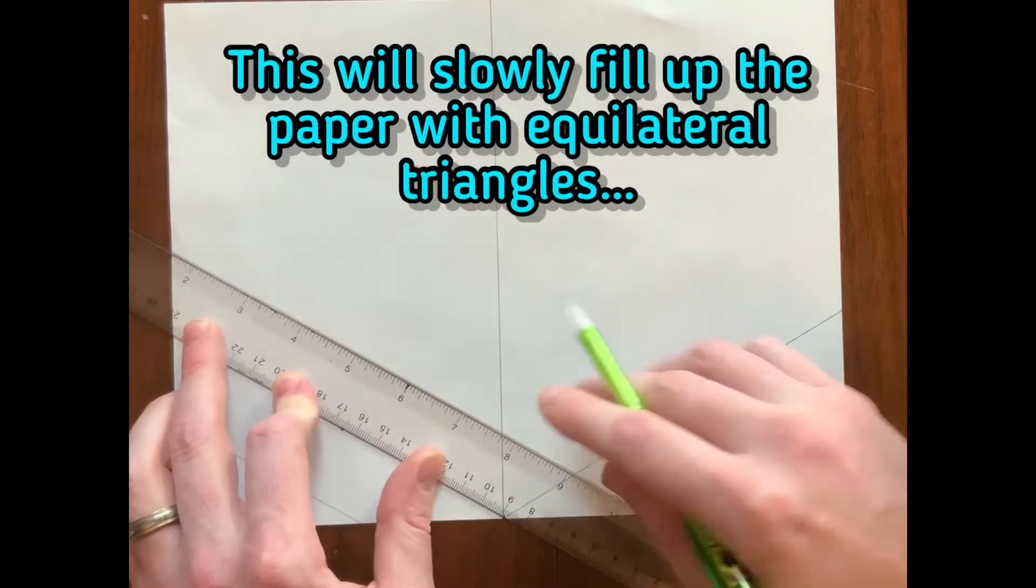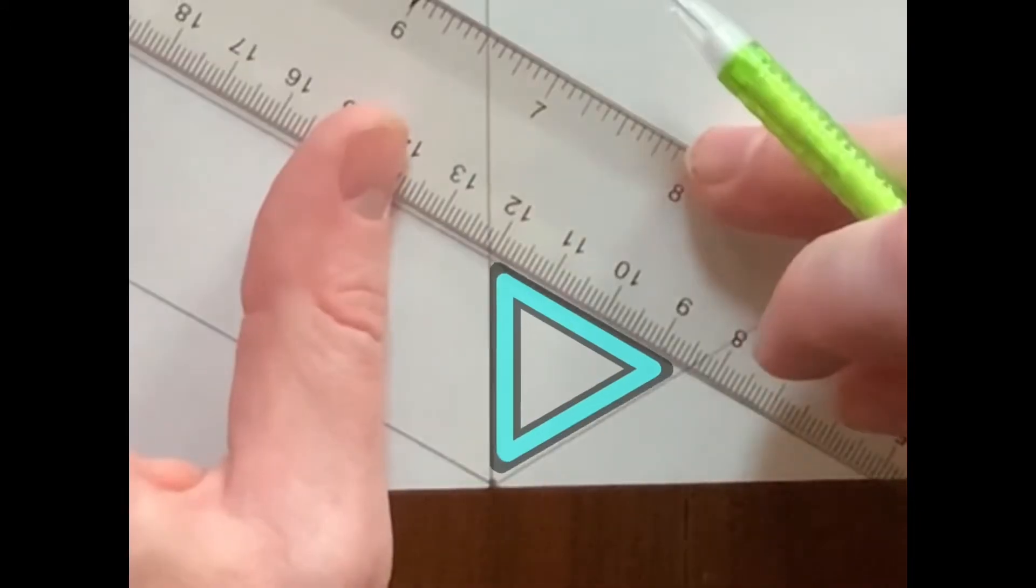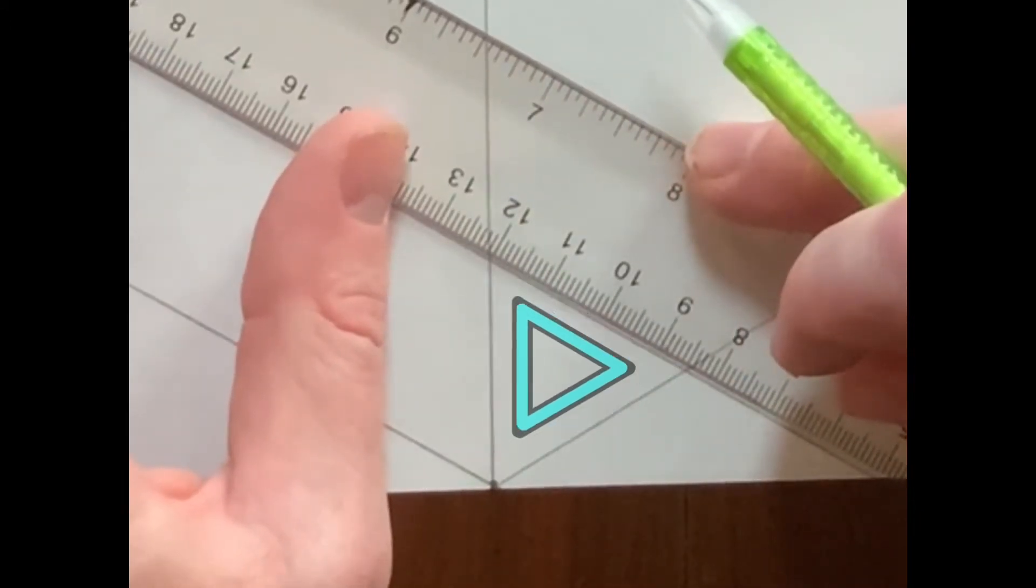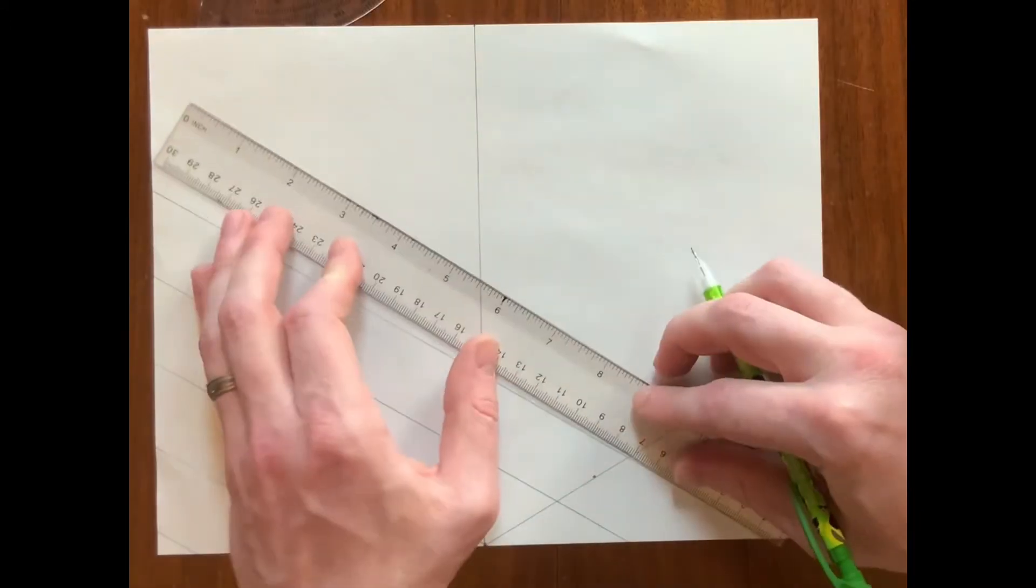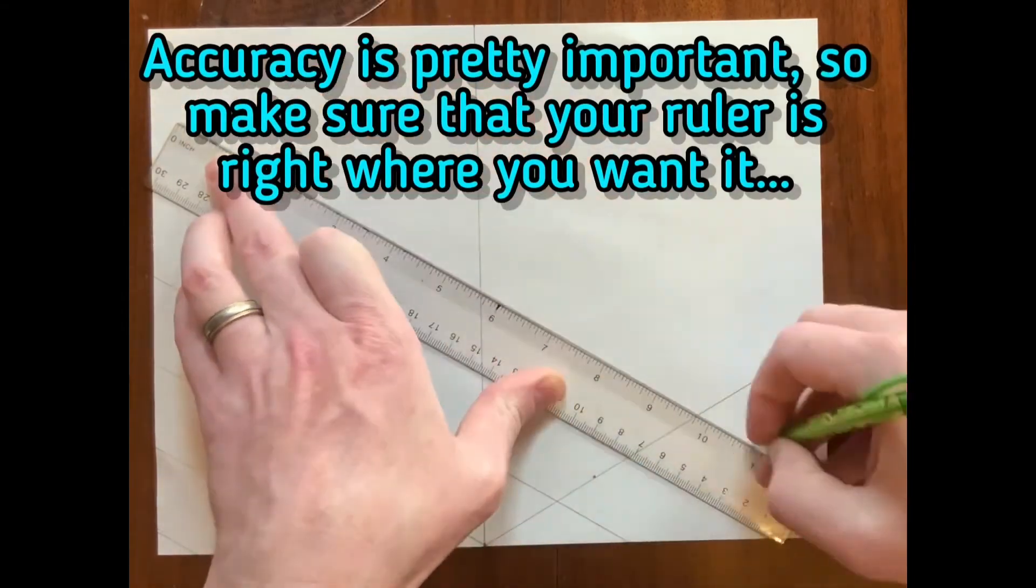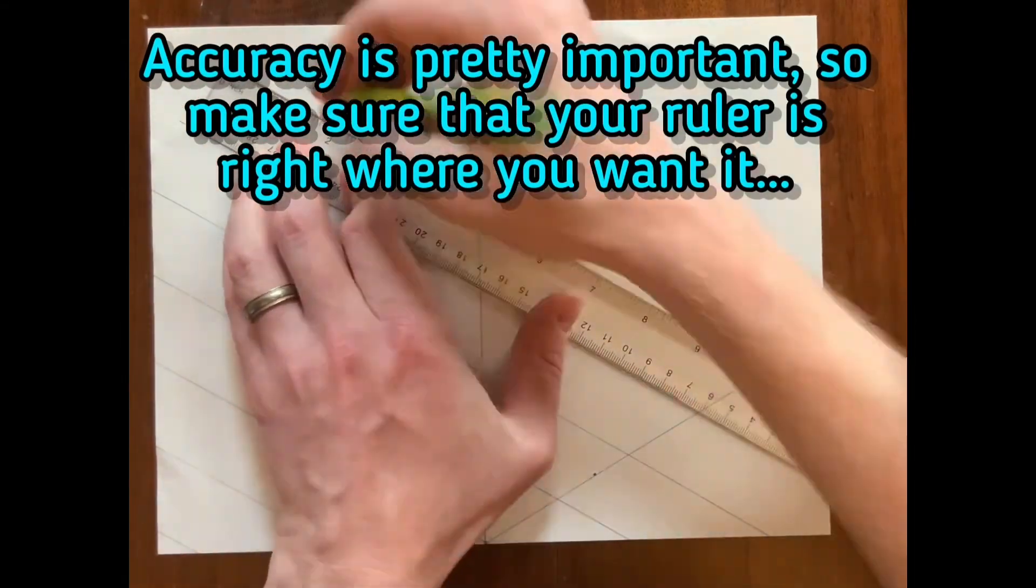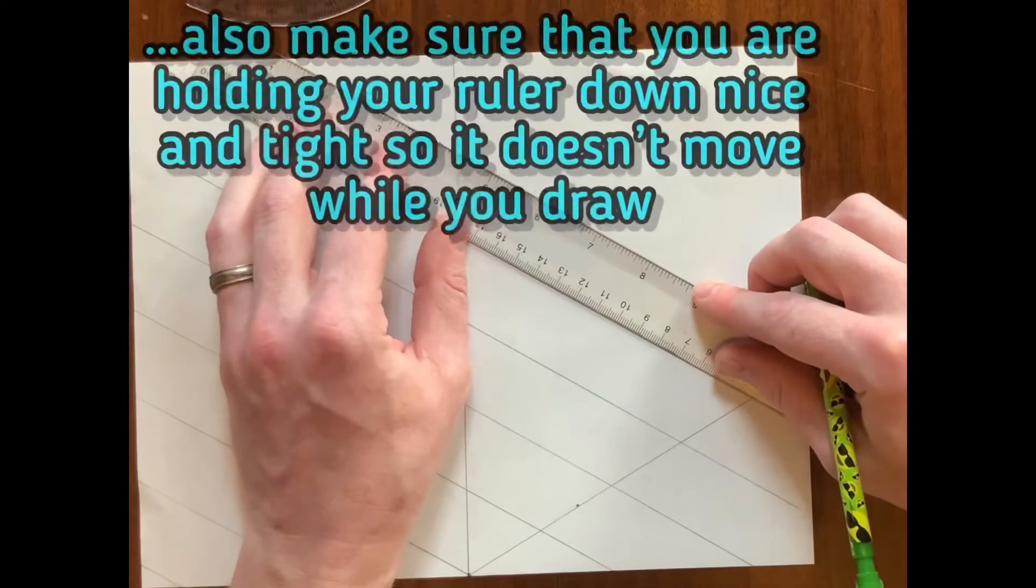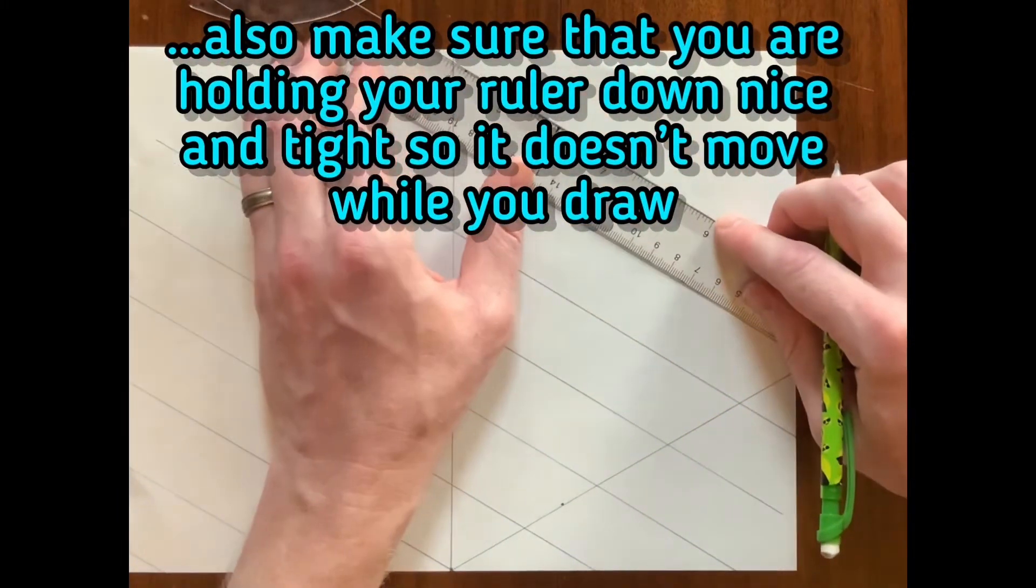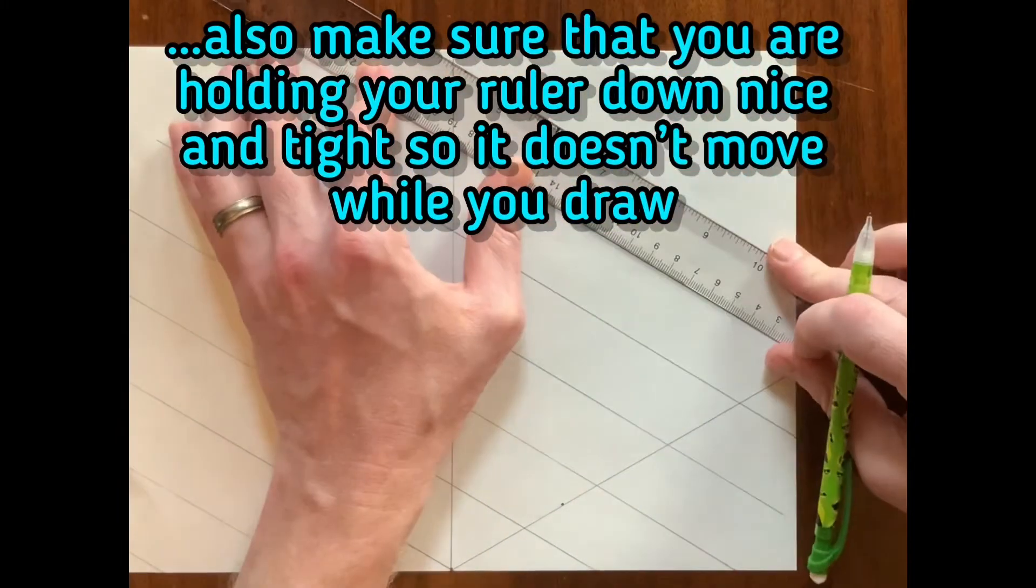This will slowly fill up the paper with equilateral triangles. Accuracy is pretty important, so make sure that your ruler is right where you want it. Also, make sure that you're holding the ruler down nice and tight so it doesn't move while you're drawing.